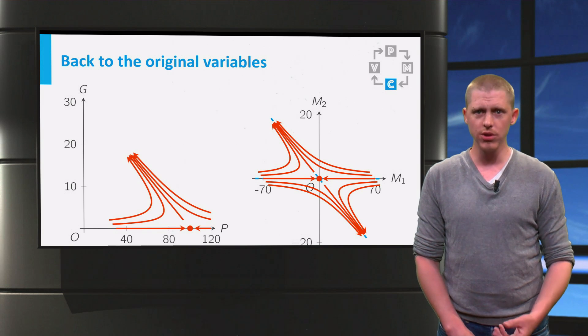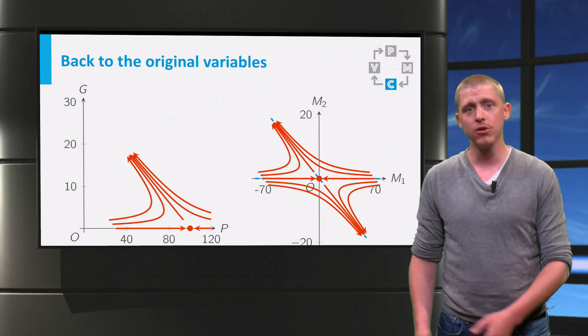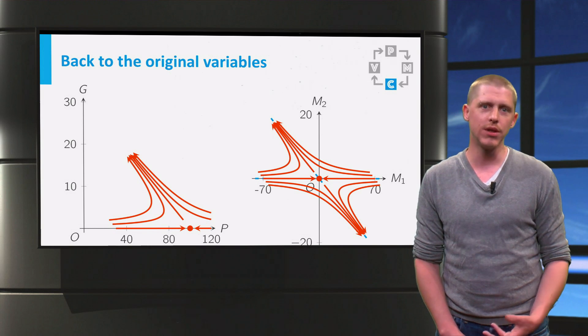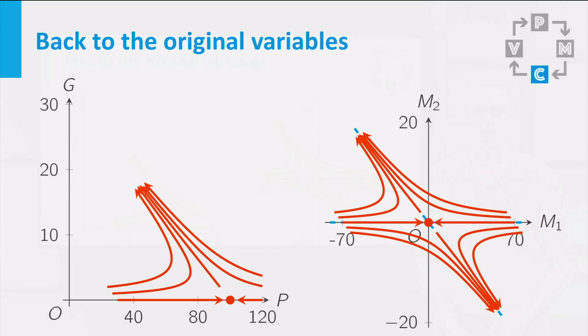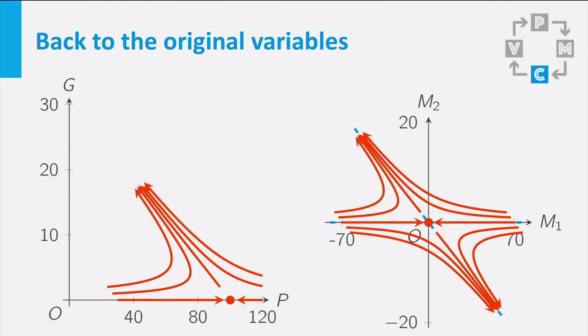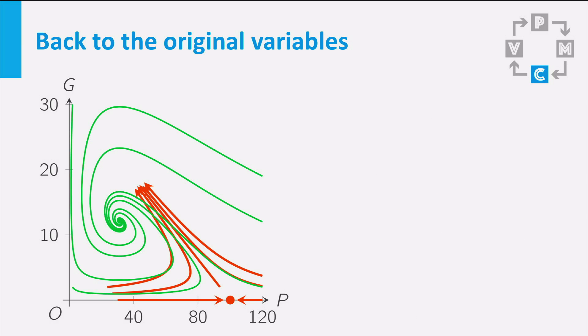To draw the solutions in the phase plane for p and g, you simply copy the sketches from the right picture to the left picture. Note that they did not include the sketches where g is negative. Previously you have also learned about Euler's method and you can make some approximations of solutions. If you add these to the phase plane for p and g, you will obtain this figure.